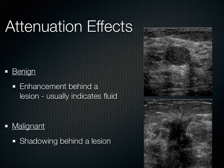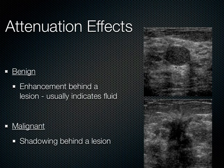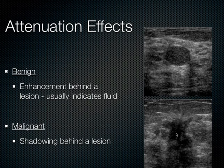Regarding attenuation effects: with a benign mass, because it's not as dense, sound can penetrate through it and you get posterior acoustic enhancement — similar to what you see behind the bladder or gallbladder, where it looks more hyperechoic behind those organs. With a malignant mass, there's significant shadowing behind it. Sound is attenuated much more in a malignancy, mostly because of its density.